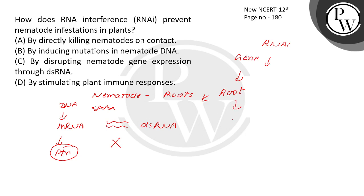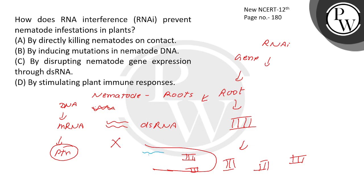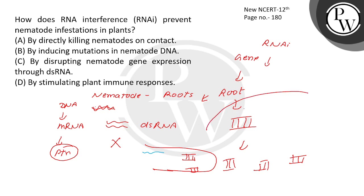This is called anti-sense and sense RNA. There are specific molecules which make this RNA. If you feed this RNA into the system, it will go into the nematode. DNA has created mRNA, so this is the mRNA complementary strand. Because it is used to make this strand, the DNA is used to make this strand — so it is called RNA complementary. It will combine with the double strand and will not express the protein, so it will not grow.